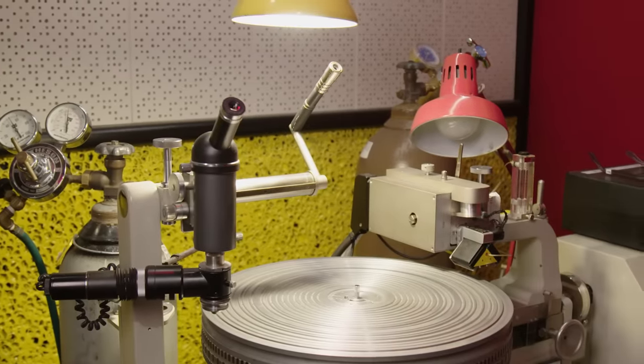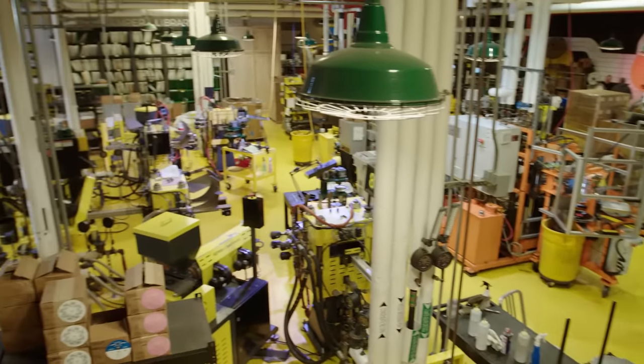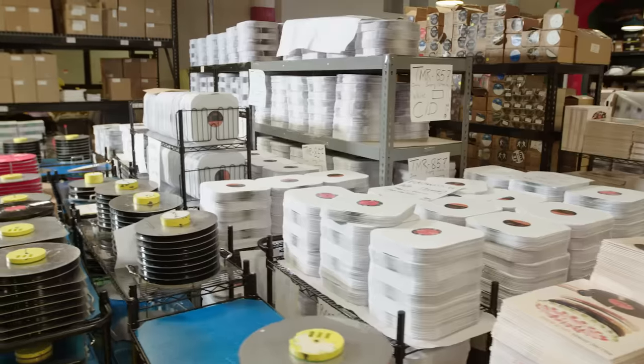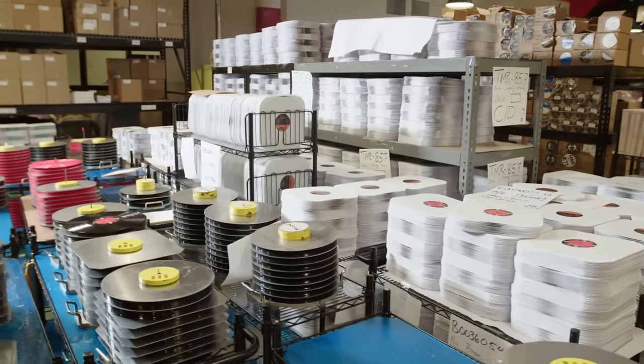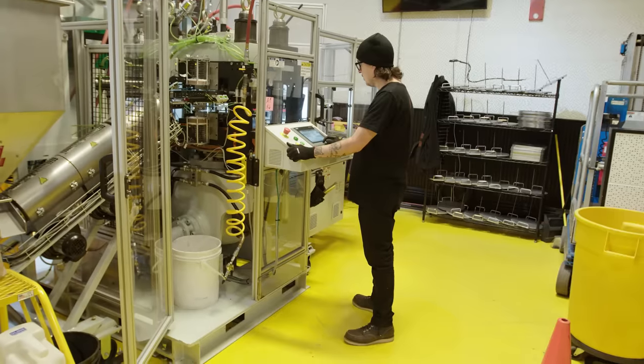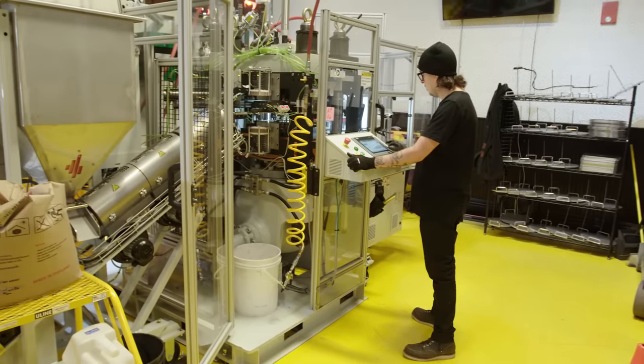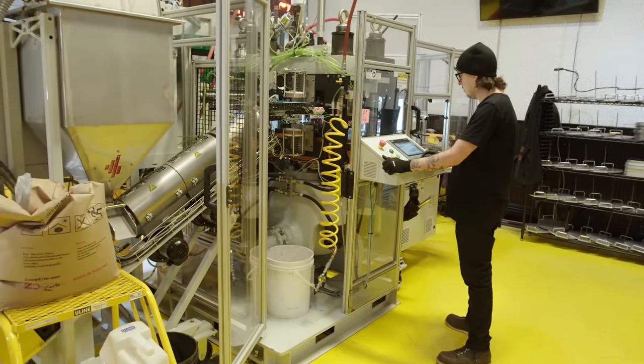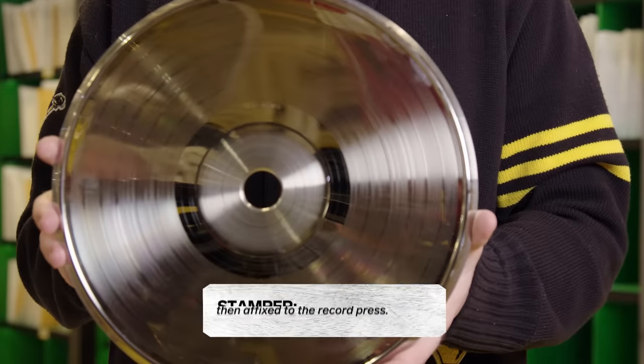Once WAR is done mastering, we send the lacquer off to be turned into a stamper so we can manufacture records. This process is called electroplating, and it's done at an outside facility. The process of electroplating entails covering the lacquer in silver nitrate and dipping it into a nickel bath. The stamper is a reverse image of the lacquer.